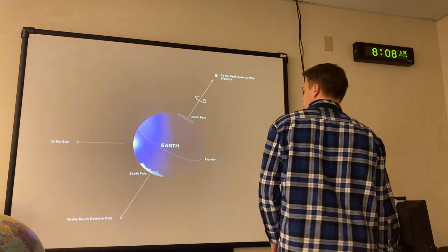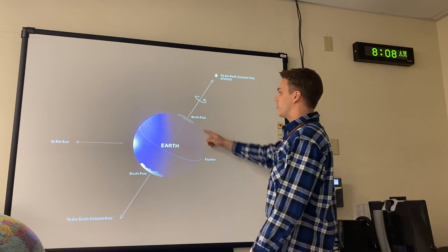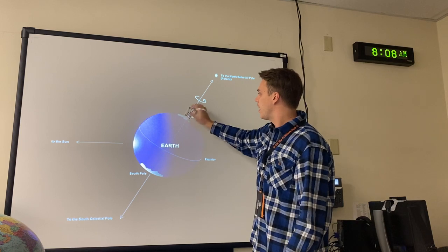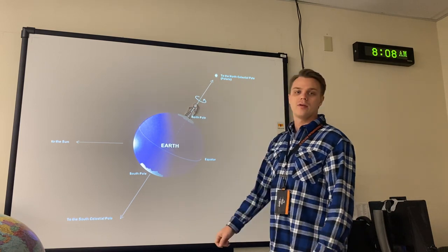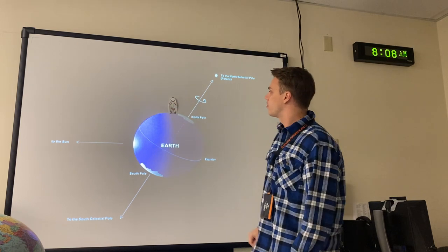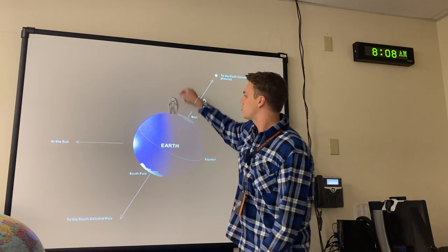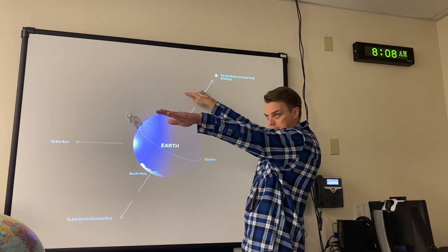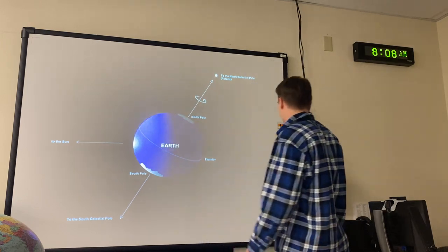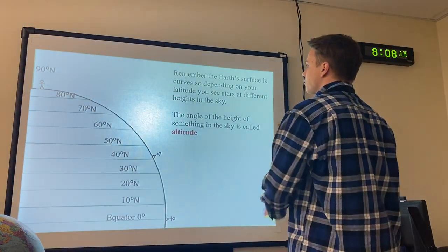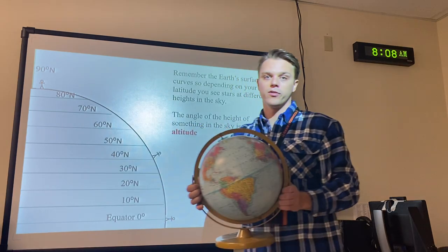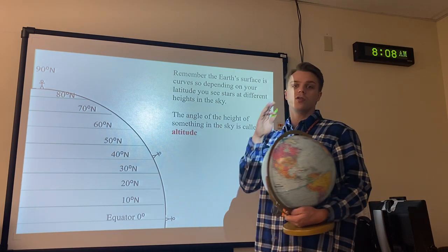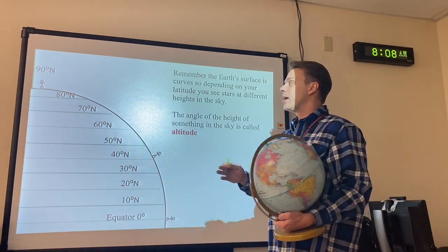Here's how to imagine it: the North Star is directly above the North Pole. If you're standing right at the North Pole, you look straight up to see it. As you move further from the North Pole, you look at lower and lower angles. By the time you reach the equator, you have to look flat out — straight out in the northern part of the sky. This is because the Earth is curved, so finding the North Star looks different from every location.